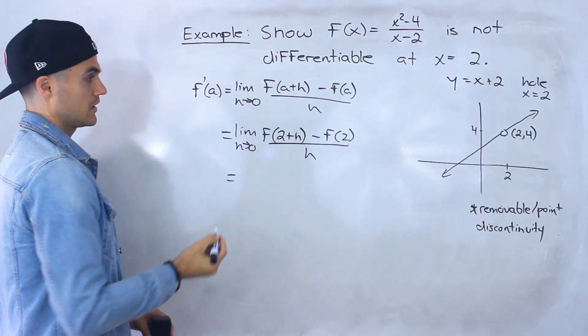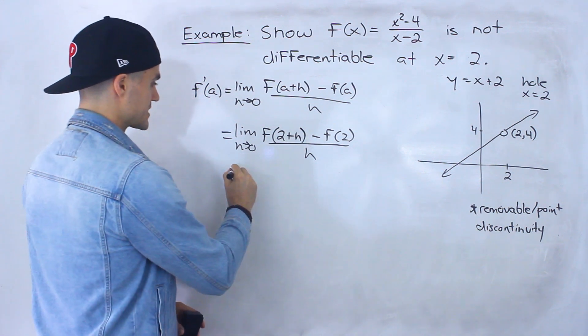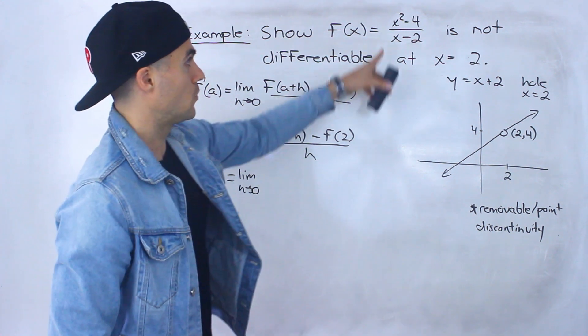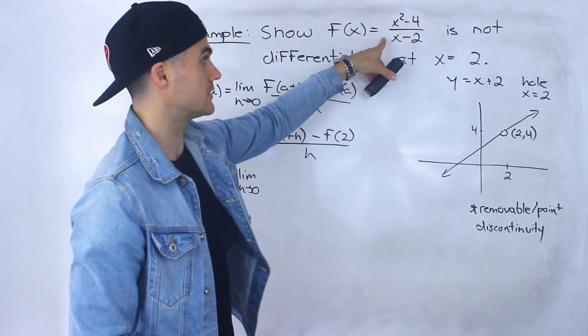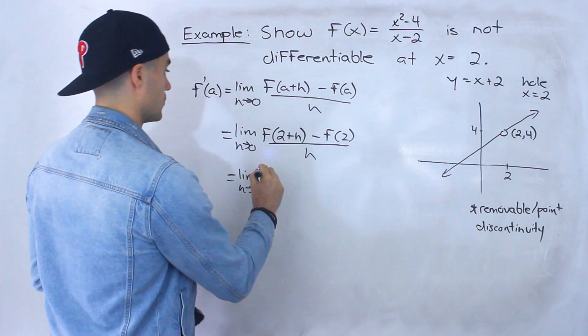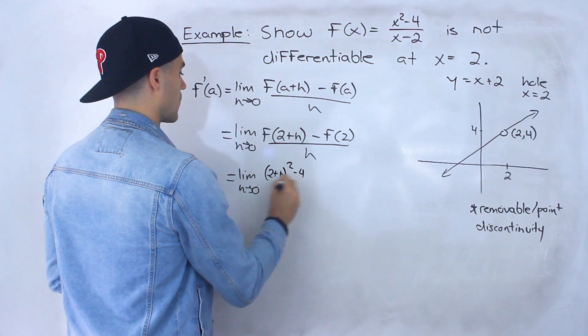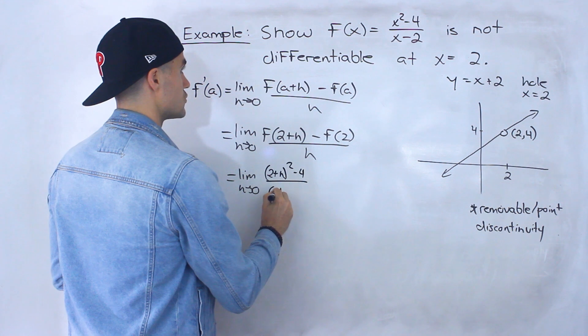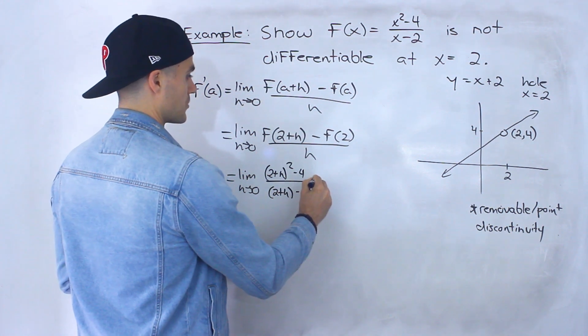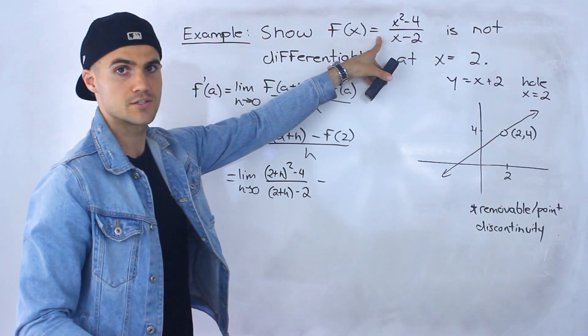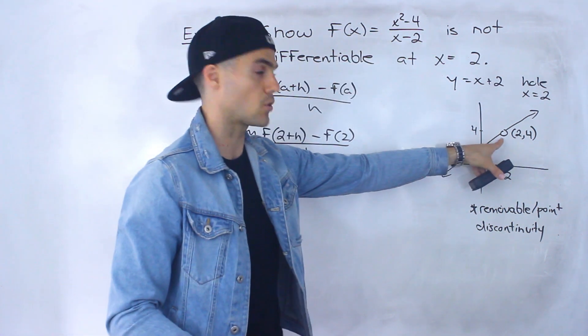What's going to happen here, notice that f of 2 plus h we could plug in. You have to plug it into the original function so it would be 2 plus h squared minus 4 over 2 plus h minus 2. But the problem is, notice f of 2 we can't plug into here. It's undefined because there's a hole there.